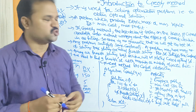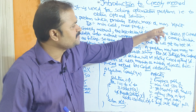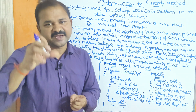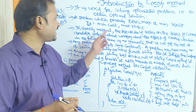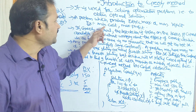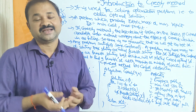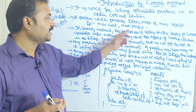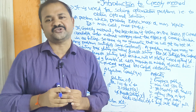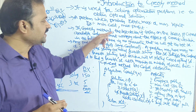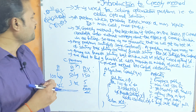An optimal solution is a problem result that is either maximum or minimum — it either maximizes or minimizes the result. If you consider cost, minimization of cost is the optimal solution — less cost is optimal. If you consider profit, maximum profit is the optimal solution.